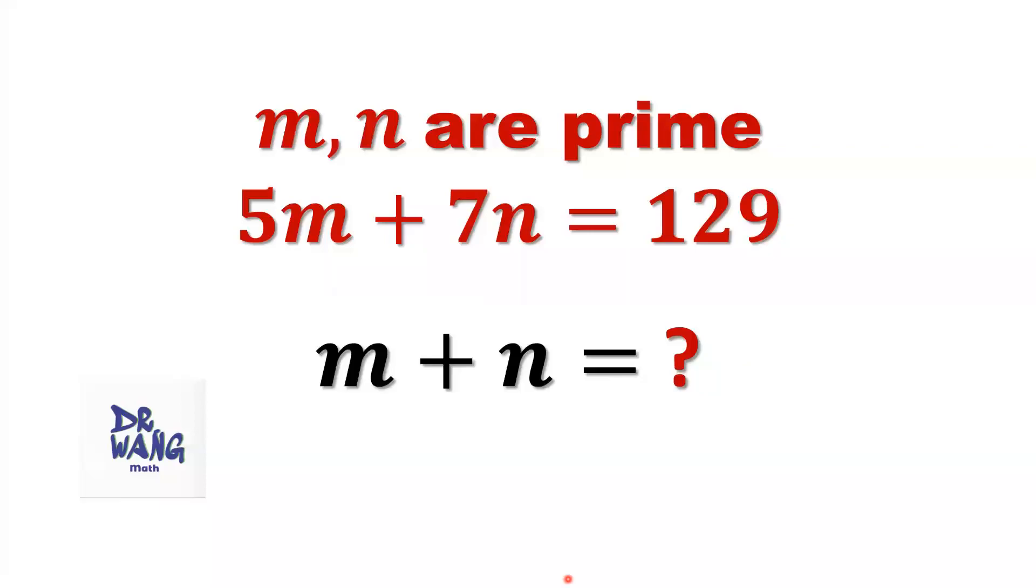Hello everyone, I'm Dr. N. Here is the question. If m and n are prime numbers, 5 times m plus 7 times n equals 129, what is the value of m plus n?